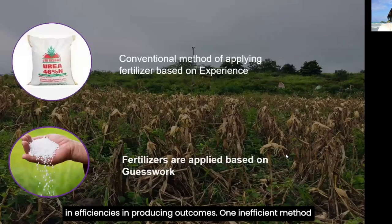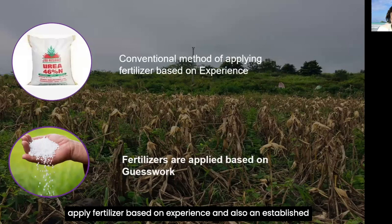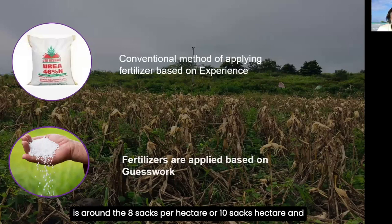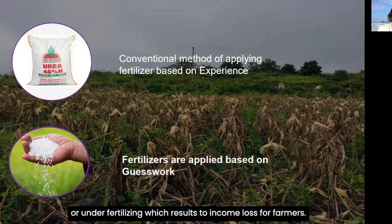One inefficient aspect of conventional farming is the application of fertilizers, because farmers use fertilizer based on experience and established application rates — for example, 8 or 10 sacks per hectare. Because of this, fertilizers are applied based on guesswork, which inherently gives rise to either over-fertilizing or under-fertilizing, resulting in income loss for farmers.